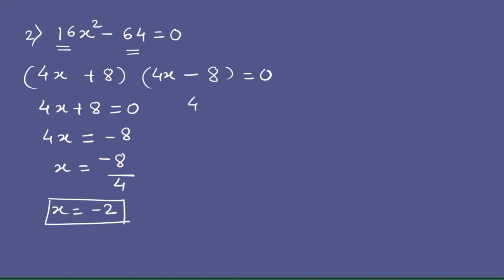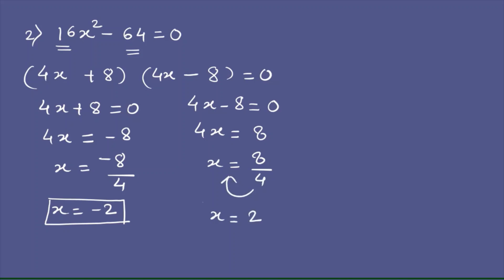When we take 4x - 8 = 0, then 4x = 8. Dividing 8 by 4 gives x = 2. This is how we solve quadratic equations. Now let's take the third example.